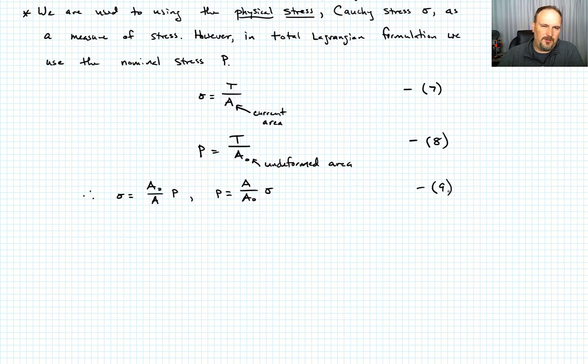So in the case of the total Lagrangian, why are we using the undeformed area? Because we want everything to be with reference to the initial material point coordinates, capital X. We're not trying to do it with respect to the current coordinates. So our relevant reference is this A₀ term.